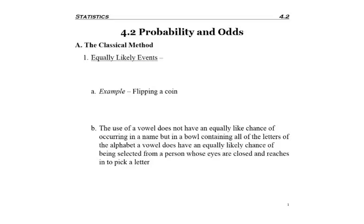So now in section 4.2 we're actually going to start calculating probabilities and look at odds towards the end. When it comes to calculating probability, there's three methods that can be employed. The first one is the classical method, and this is what we'll use the most. It's based on the concept of equally likely events, and this is when each event has the exact same chance of occurring.